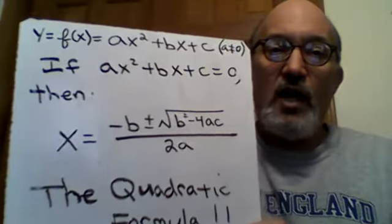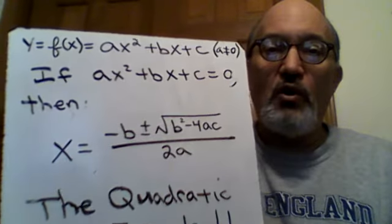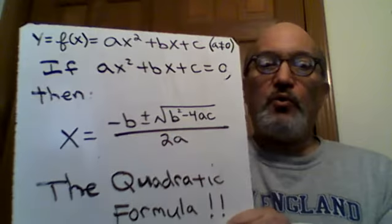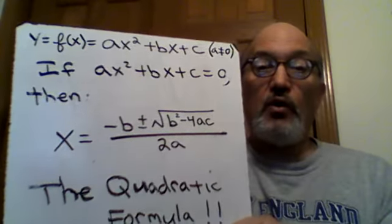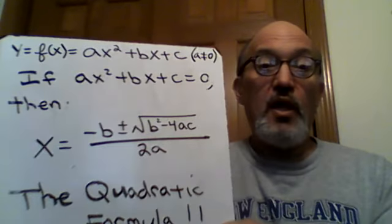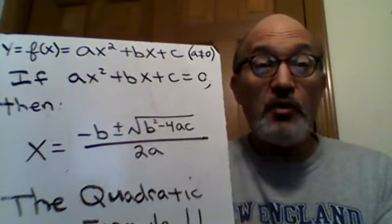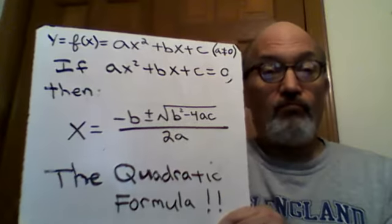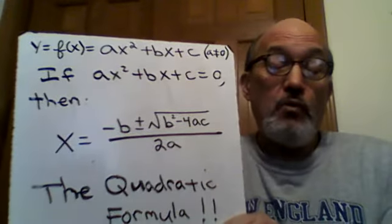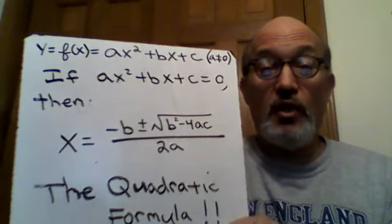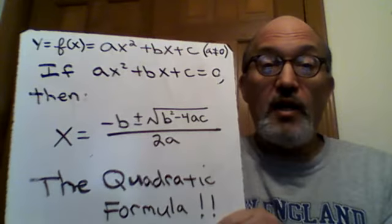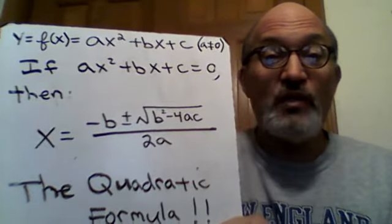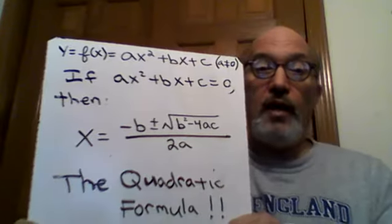And if we set the standard quadratic function equal to zero and solve for x, in other words if ax squared plus bx plus c equals zero, then x equals negative b plus or minus square root of b squared minus 4ac all over 2a. And anyone can get to the point where they can say it just that fast. It's like riding a bicycle. Once you learn you never forget. Negative b plus or minus square root of b squared minus 4ac all over 2a.